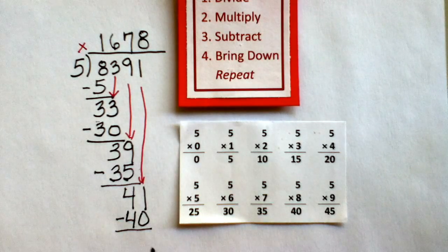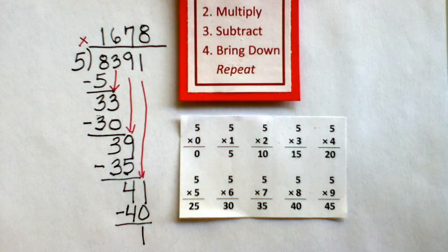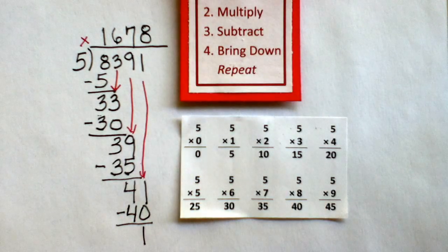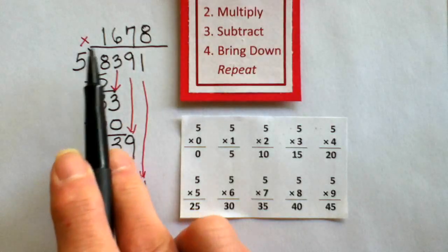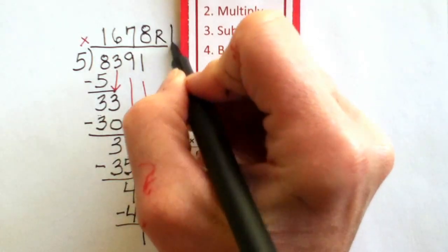Third step, subtract. 1. Fourth step, bring down the next number. But I see I don't have another number to bring down. So that means I have finished my problem. And my answer is 1,678, remainder 1.